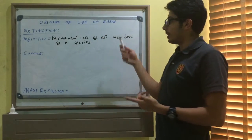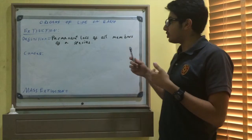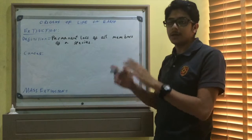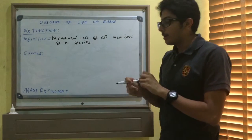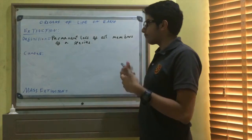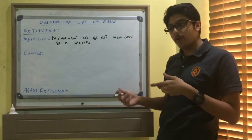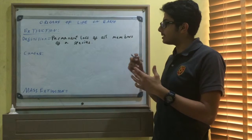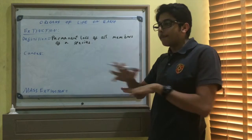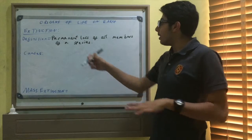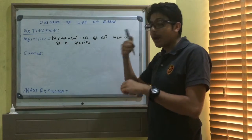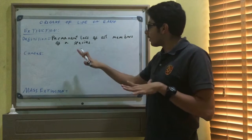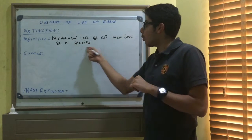Now we're going to be talking about extinction. Extinction, the definition, is the permanent loss of all members of one species. For example, let's say the blue whale. If it is to be extinct, then that means there are no more blue whales at all. Permanent loss - because once they're gone, there's no more to reproduce. So they're gone forever, all members of one species.